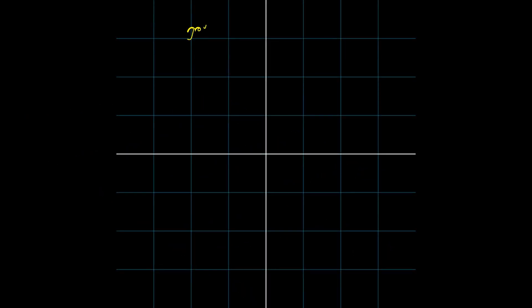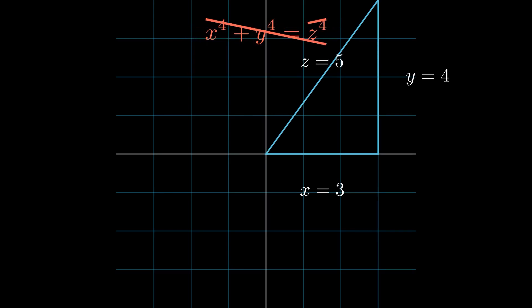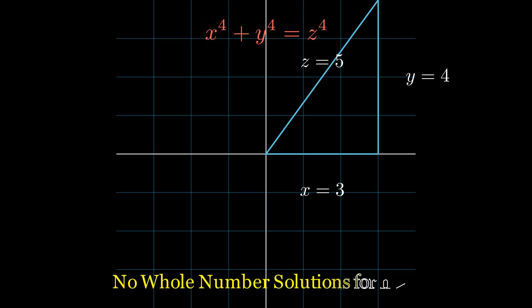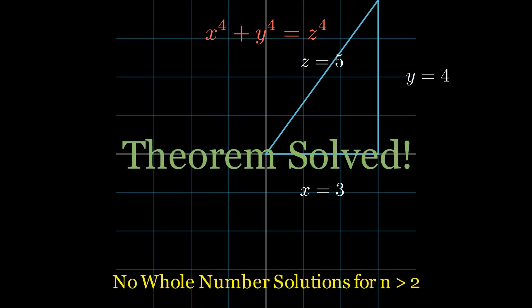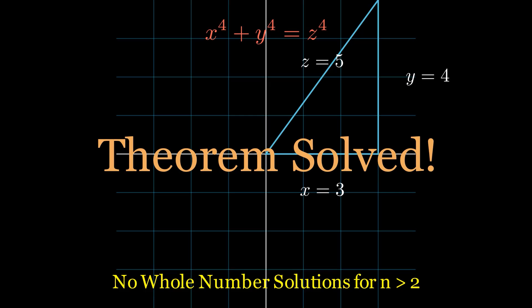And at last, Wiles proved Fermat's last theorem. For n is greater than 2, there are no whole number solutions to x to the n plus y to the n equals z to the n. The centuries-old mystery was finally solved.